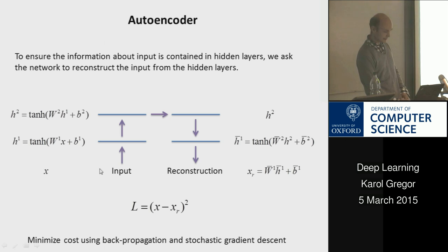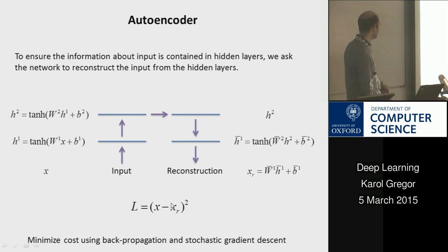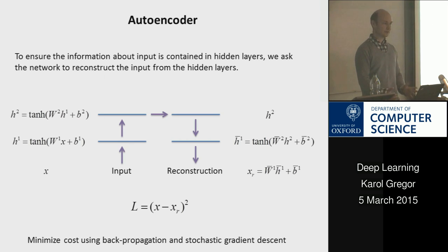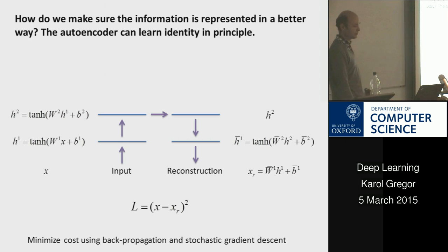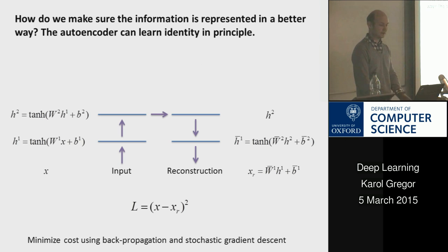The autoencoder takes an input x, passes it through neural network layers with tanh activations, and produces a reconstruction. What you minimize is the objective ||x - x_r||, so if this value is small, reconstruction is good. That's the cost function. Everything is differentiable, so you just backpropagate. This way we can ensure information is really represented in the hidden layers. But the autoencoder could just copy the input — take it, copy, copy, copy — perfect reconstruction, but you haven't learned anything.